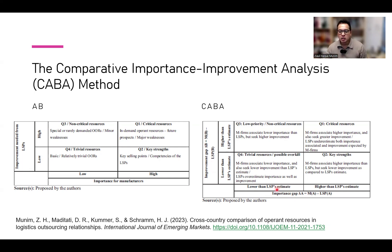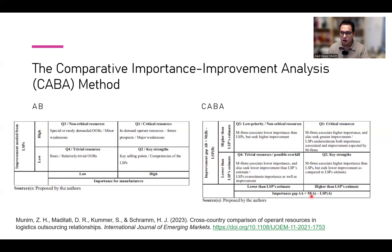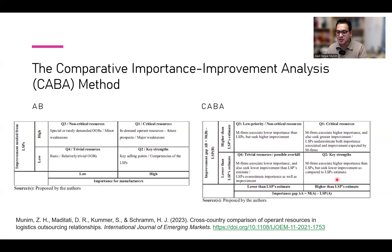Here we calculate the importance gap: manufacturer importance rating minus the LSP importance rating, and then we can find out the gap. For example, if the manufacturer importance average is 4 for a particular variable and the LSP is 5, the importance gap will be negative 1. So basically the LSP estimate is higher. If the manufacturer's importance is lower than the LSP's estimate, it will come in this quadrant; if the manufacturer's importance is higher than the LSP's estimate, it will come in this other quadrant.